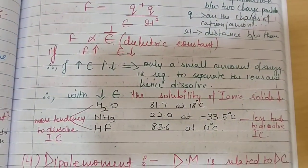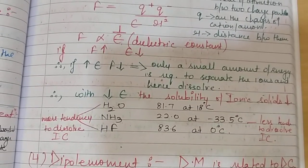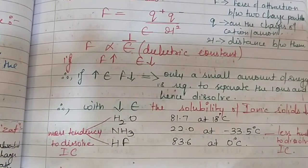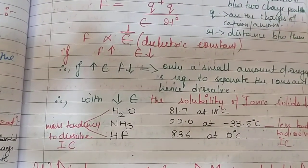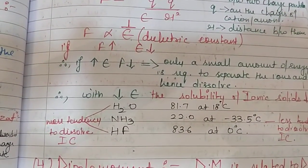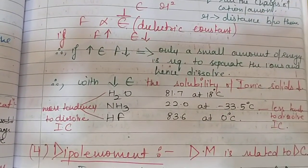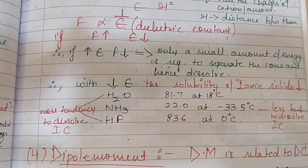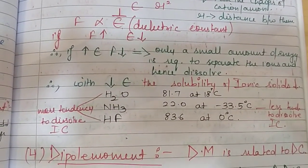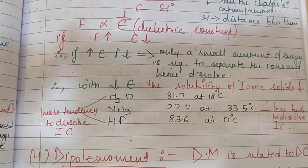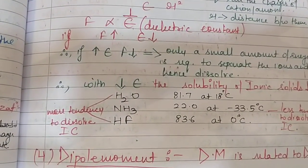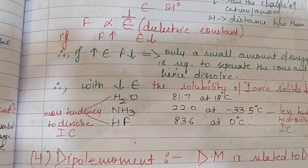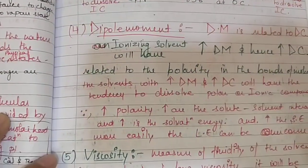For water, the dielectric constant is 81.7 at 18 degrees Celsius. HF and water both have high dielectric constants, so they have a greater tendency to dissolve ionic compounds. For ammonia, the dielectric constant is around 22, so ammonia has less tendency to dissolve ionic compounds.